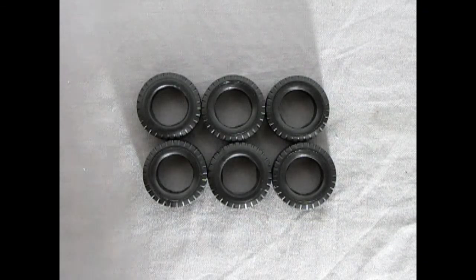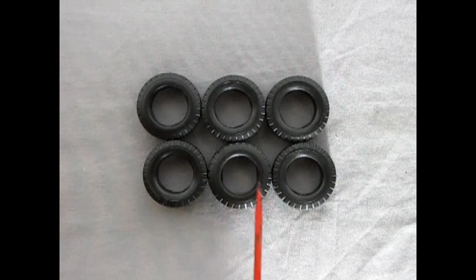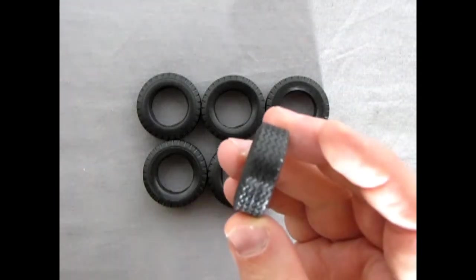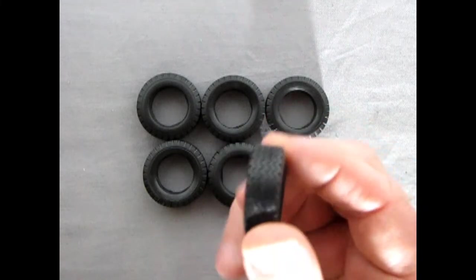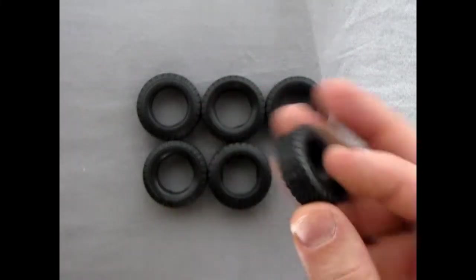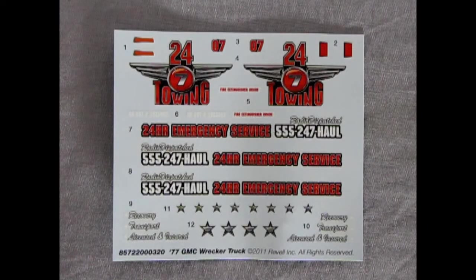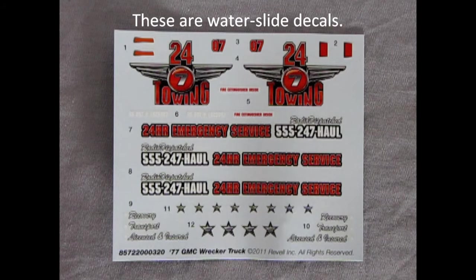Next we have our tires for our GMC wrecker. As you can see, there are no names on the side walls so they're very generic, but the tread pattern on here is really quite nice and it will look like an accurate heavy-duty truck once you get these all put in place.